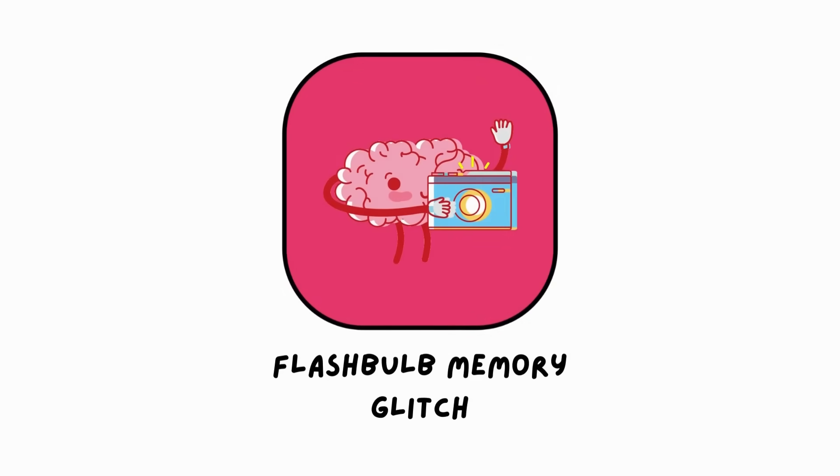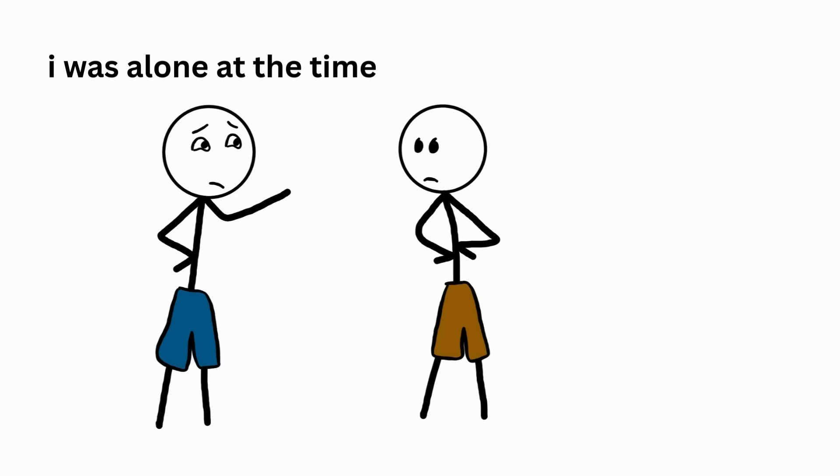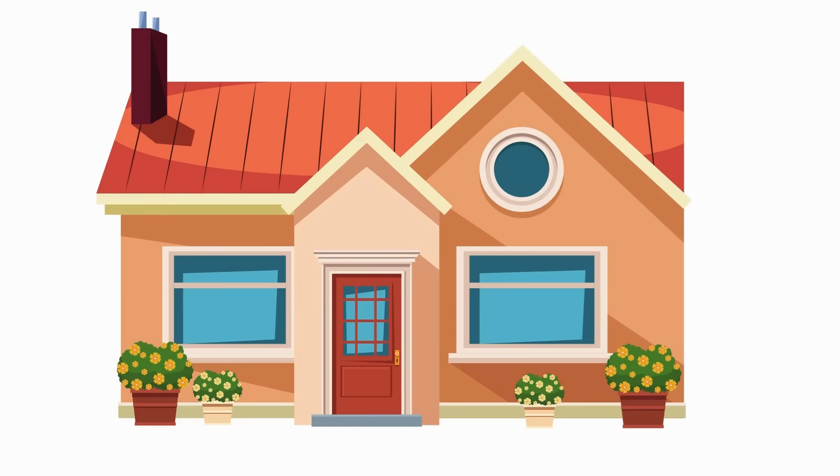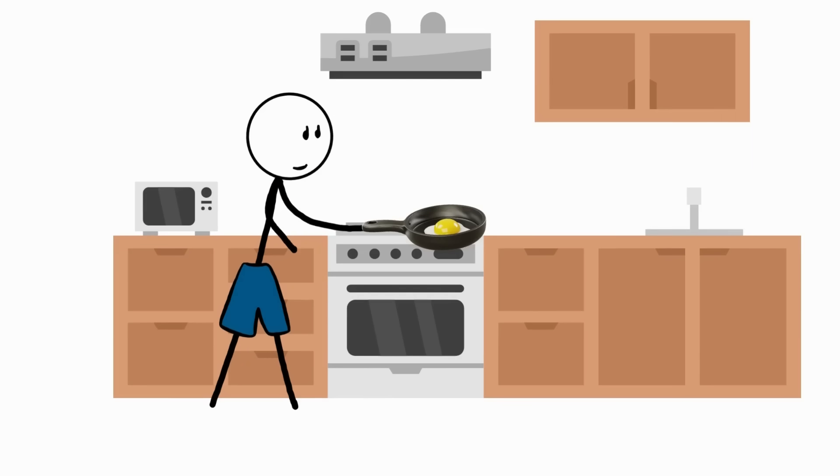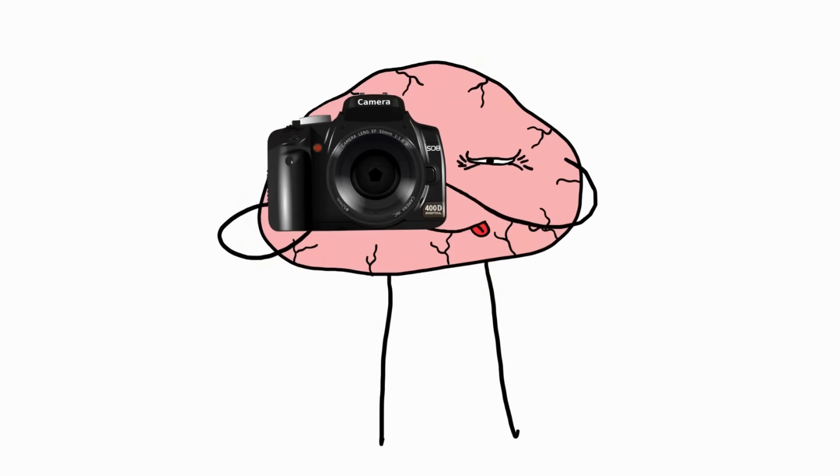Flashbulb Memory Glitch. When you think about a traumatic event in your life, such as the day you lost someone close to you, you can probably describe everything about that exact moment. From where you were, what you were doing, and even what you were wearing. It almost feels like the moment is frozen in time, like a mental snapshot. This is what's called a flashbulb memory.